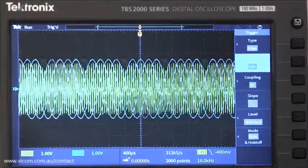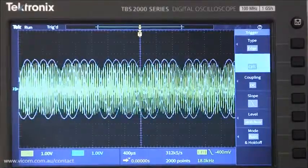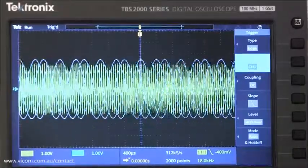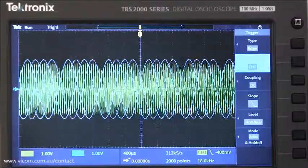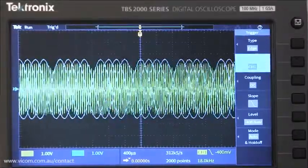For example, it can be difficult to get a stable display on an AM signal like this one. But if you can connect the modulating signal or envelope and use it as a trigger source, it's easy to get a clear picture.